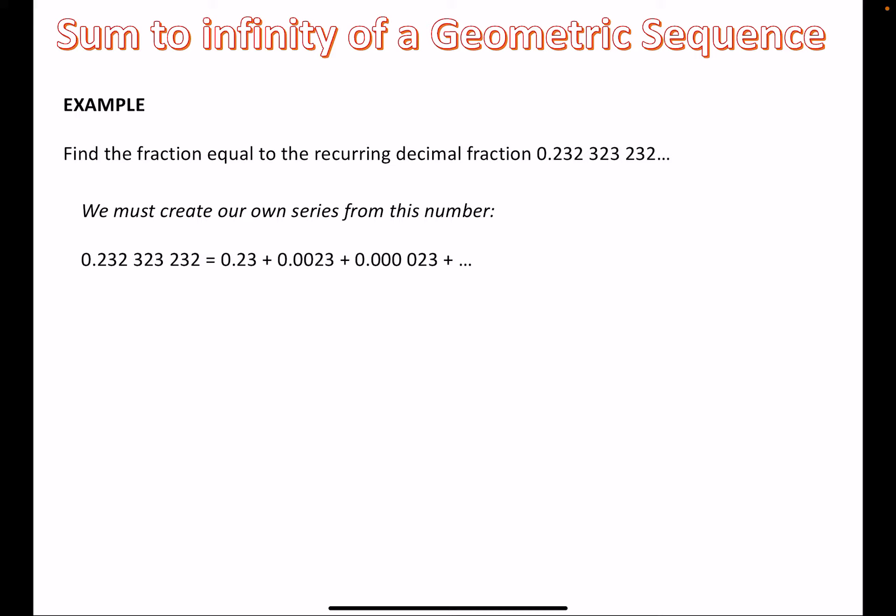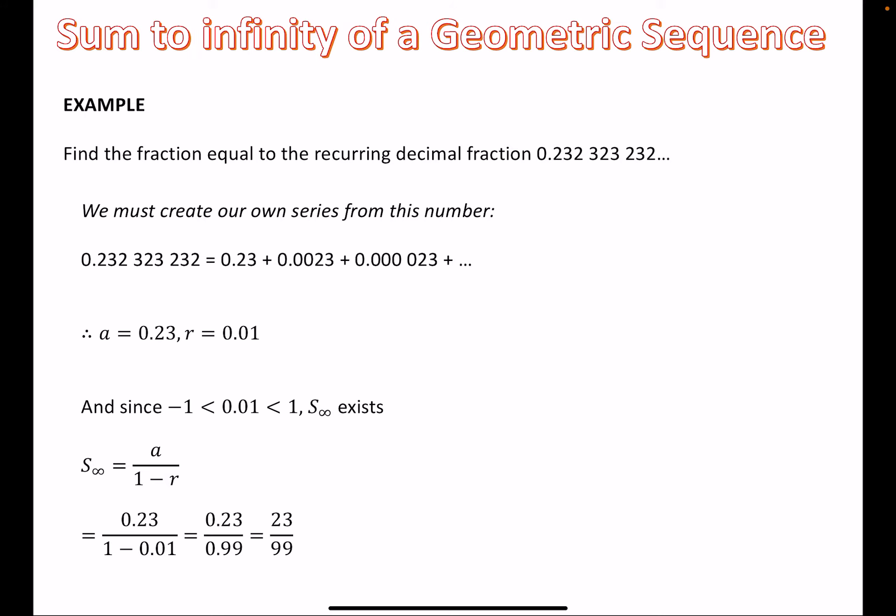So we'd say in this series that a is equal to 0.23, and r is equal to 0.0023 divided by 0.23, which is 0.01, in which case we know that the sum to infinity does exist, because 0.01 is between minus 1 and 1. In which case we can work out what that is, and that would just be the fraction that is equal to the recurring decimal fraction. So it would be a, which is 0.23, divided by 1 minus the ratio 0.01, and it's basically just writing it in its most exact form, in other words, without decimals. So 23 over 99 for this one.